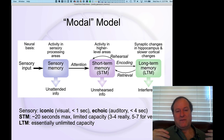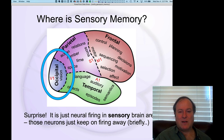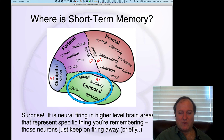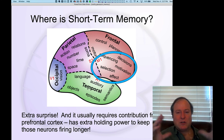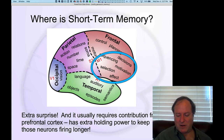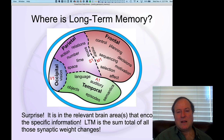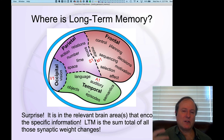The modal model gives a phenomenologically intuitive account of how memory is organized, and we can map it directly onto underlying neural mechanisms. Active firing of neurons in the occipital area is iconic sensory memory. Short-term memory is active firing in higher cortical levels, with working memory involving a more robust contribution from frontal cortex. Long-term memory is distributed everywhere but especially in the hippocampus, encoding episodic memories — that's the big picture of how memory is organized.